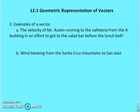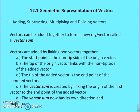Examples of vectors would be the velocity of Mr. Aughton running to the cafeteria from the A building in an effort to get to the salad bar before the lunch bell, or the wind blowing from the Santa Cruz Mountains to San Jose. So, adding, subtracting, multiplying, and dividing. Vectors can be added together to form a new ray or vector called a vector sum.